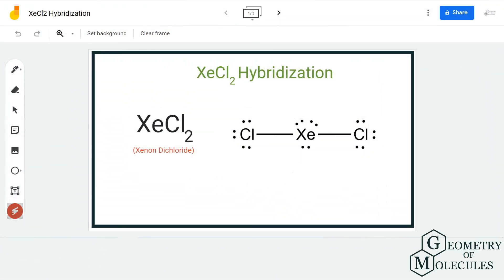Hi guys, welcome back to our channel. In today's video we are going to help you determine the hybridization of XeCl2 molecule, the chemical formula for xenon dichloride. To determine its hybridization, we are first going to look at its Lewis structure.